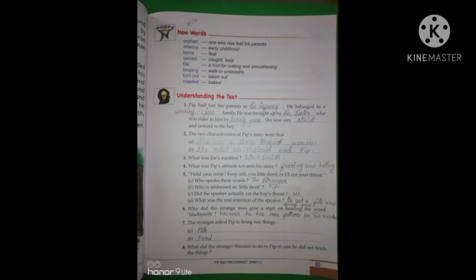Limping, walking unsteadily. Torn out, taken out and roasted means baked.